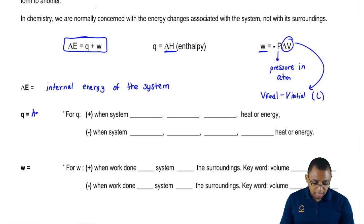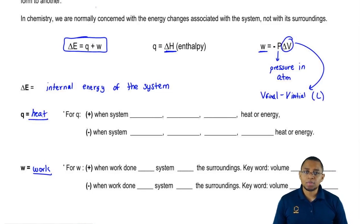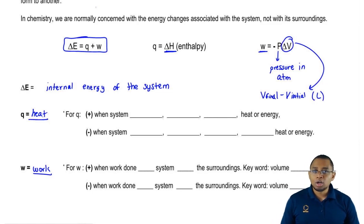When we say Q, Q means heat and W equals work. When it comes to these two terms, they can either be positive or negative based on certain keywords that your professors like to use.